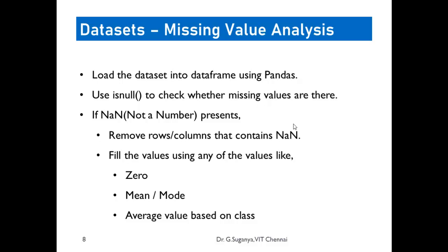After uploading a dataset to the execution environment, we check whether it contains any NaN values. If present, we have two options: remove the rows or columns containing NaN, or fill them in. However, removing is not always ideal because the affected row or column may contain important information relevant to other attributes.